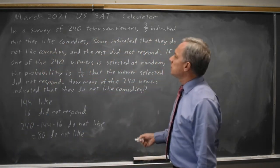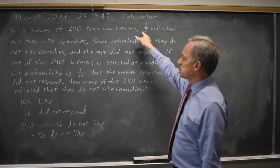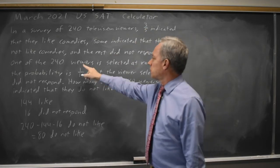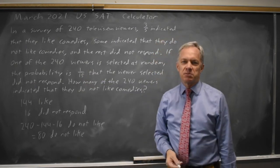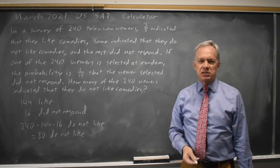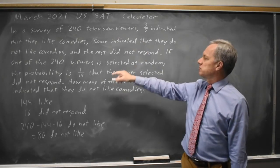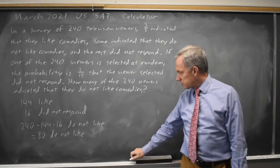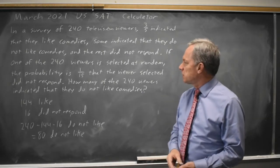We're given the fraction that like comedies, we're given a probability that someone did not respond, and the probability they did not respond if chosen at random is the same as the fraction that did not respond. So we have those two fractions, and what's left over is how many do not like comedies.